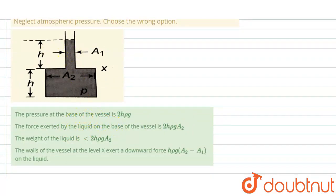First option is the pressure at the base of vessel is 2ρgh. At the base, when we write pressure due to liquid formula at any level, pressure due to liquid equals ρ into g into height of free surface of liquid from that level. You can see from base, free surface is at height 2h. So ρg into 2h. This is a correct option.